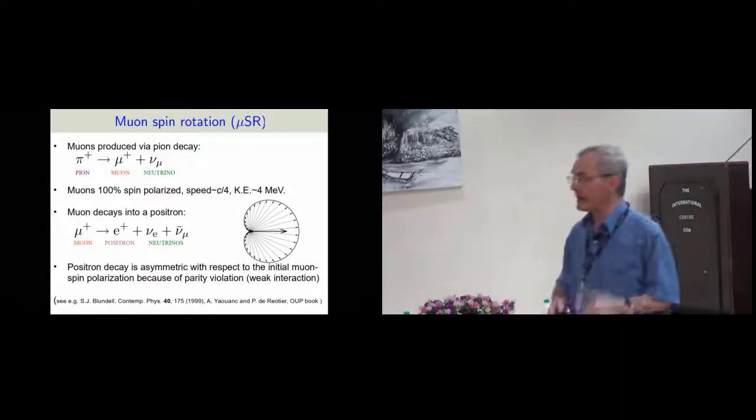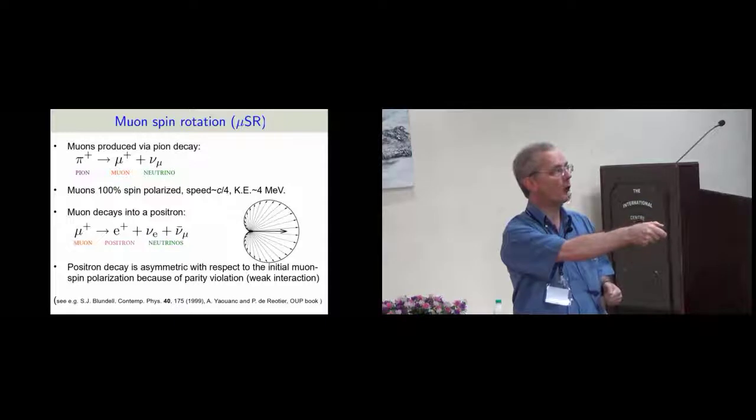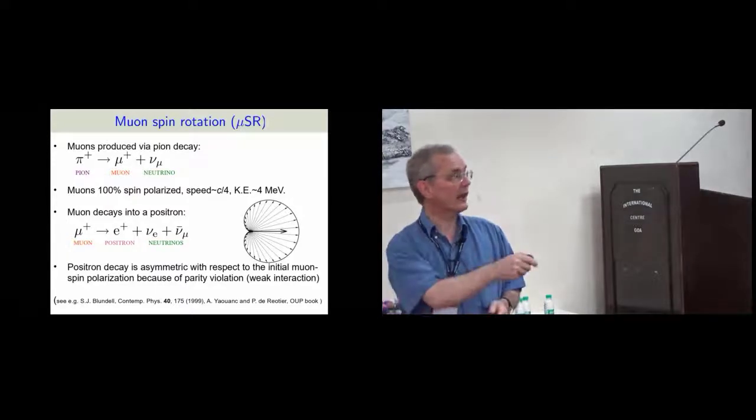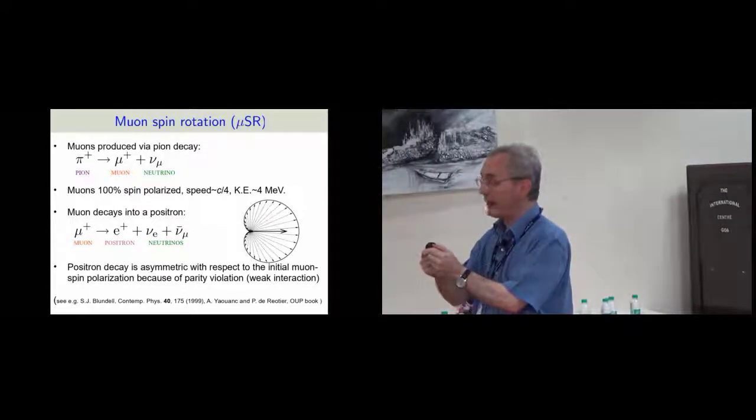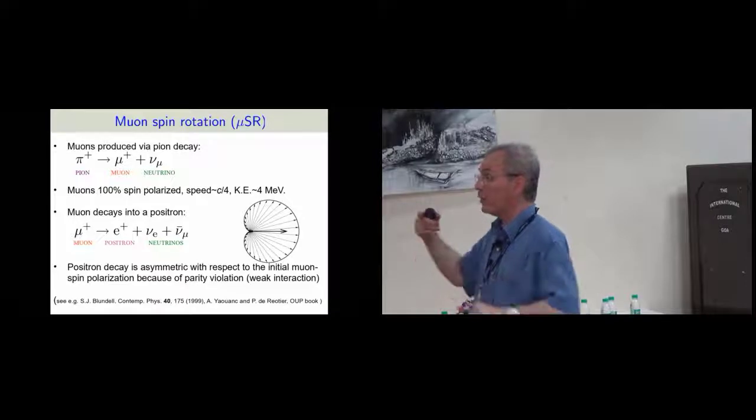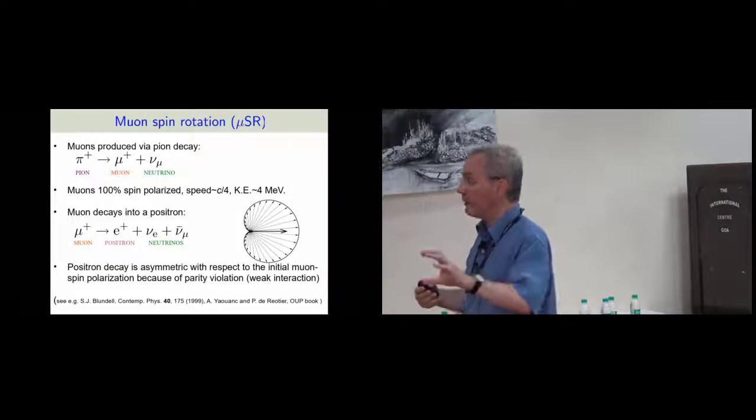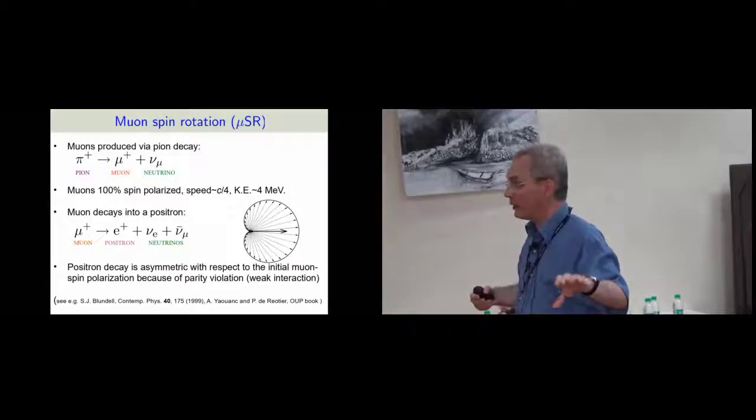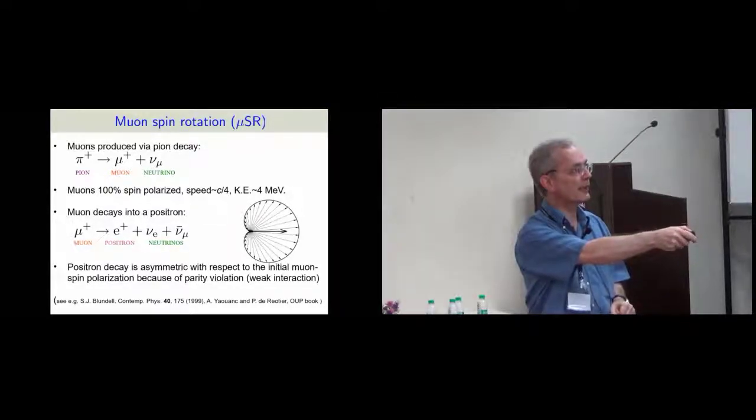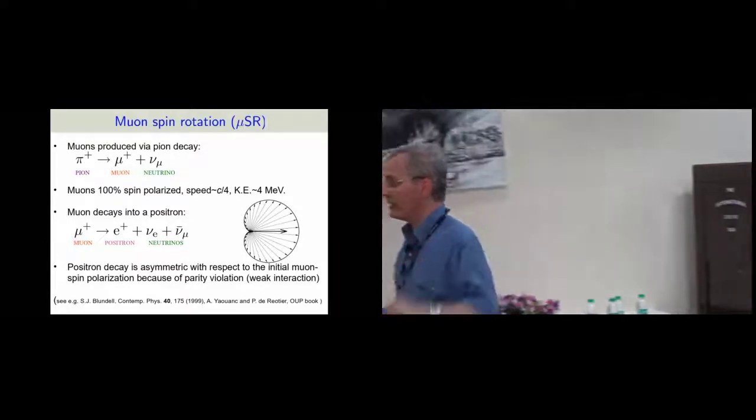Okay, so a little bit of basics of how you make the muons. You bang protons together, they produce pions. The pion very quickly decays into a muon and a neutrino. And this decay has a rather nice feature. It's a two-body decay. Because neutrinos have their spin anti-parallel to their momentum, because the pion has zero spin, the muon has to do the same. It has its spin anti-parallel to its momentum. So this nice bit of particle physics gives us 100% polarization for free. And this means that we can make these beams of particles that have a speed of about quarter the speed of light, an energy of about 4 million electron volts, and we can fire those into our sample.